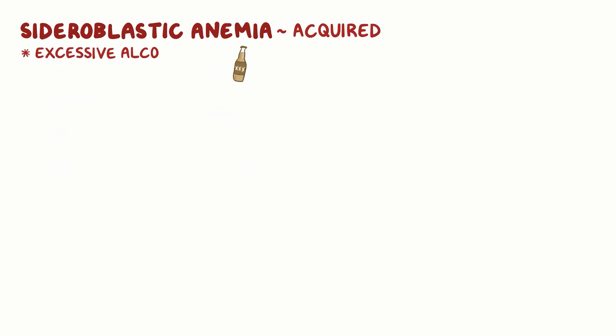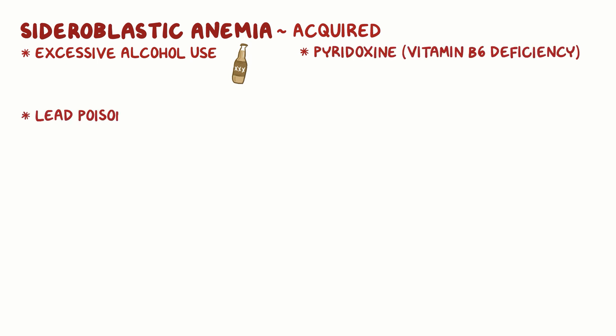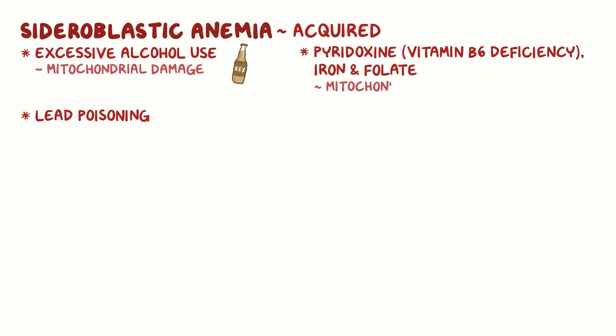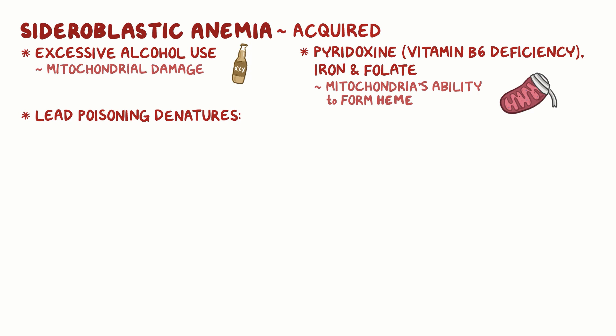The acquired causes of sideroblastic anemia include excessive alcohol use, pyridoxine or vitamin B6 deficiency, and lead poisoning. Excessive alcohol consumption can lead to mitochondrial damage and nutritional deficiencies like vitamin B6, iron, and folate, which affects the mitochondria's ability to form heme. Vitamin B6 deficiencies can also commonly happen as a result of isoniazid treatment for tuberculosis, as isoniazid attaches and inactivates vitamin B6. Lead poisoning has also been shown to denature enzymes important in heme synthesis, like delta-aminolevulinate dehydratase and ferrochelatase.